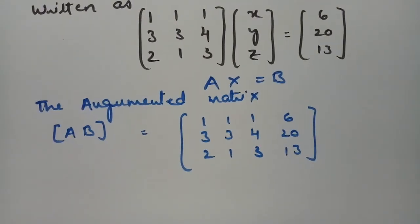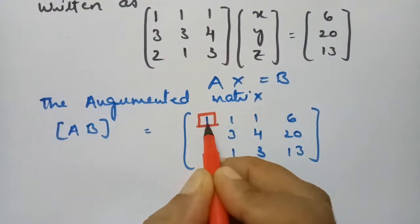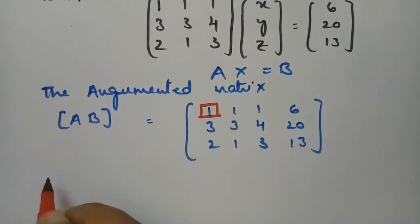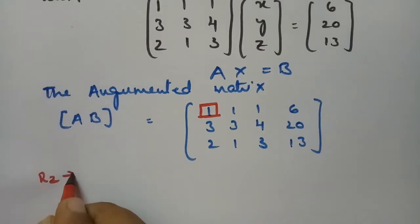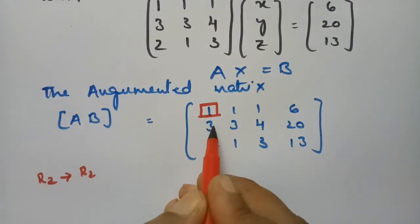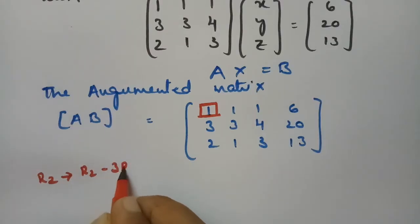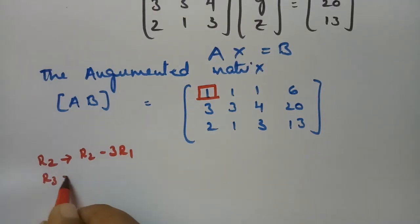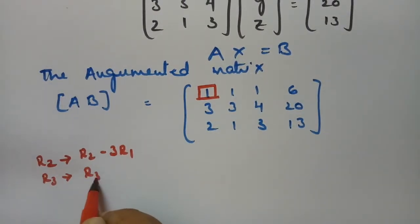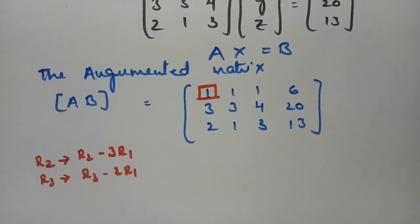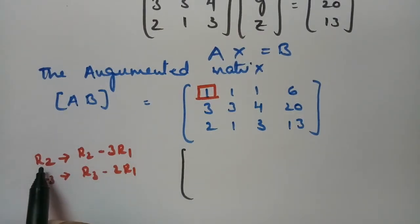Now we have to find the echelon form. Using the first diagonal element, I have to make the elements below it zero — that is row 2 and row 3. The operation will be R2 = R2 - 3R1, and R3 = R3 - 2R1.